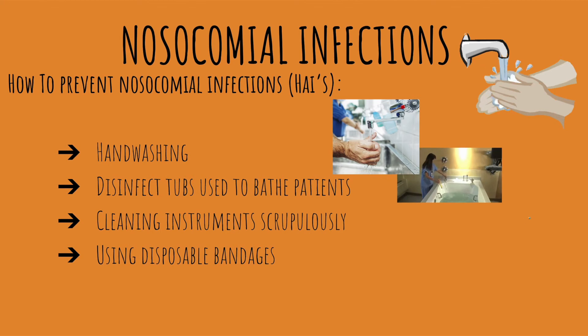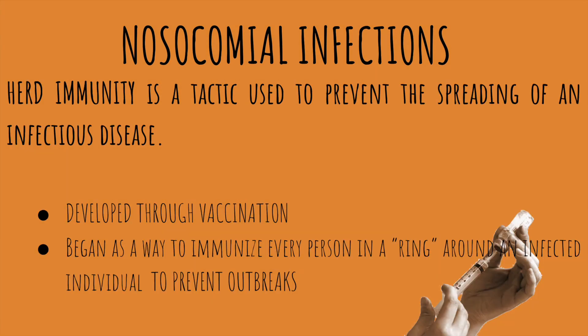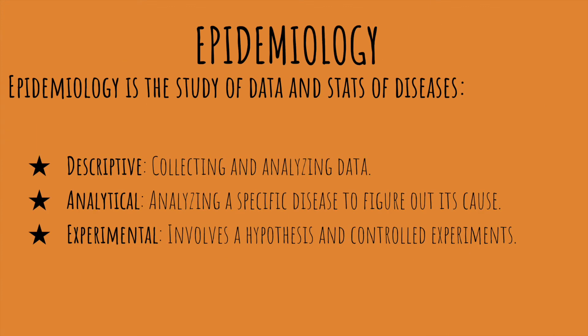Nosocomial infections or HAIs can be prevented by hand washing, disinfecting between patients, thoroughly cleaning instruments, and using disposable bandages. Herd immunity is a tactic used to prevent the spread of infectious disease and can be achieved through vaccination, which is a type of artificially acquired immunity.